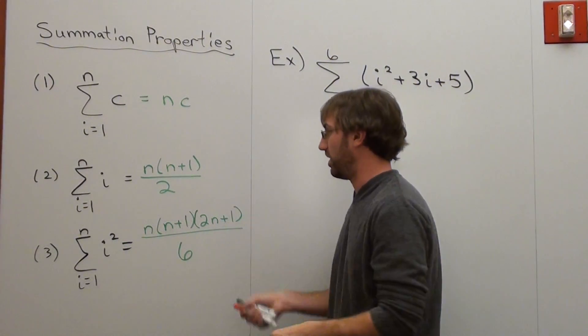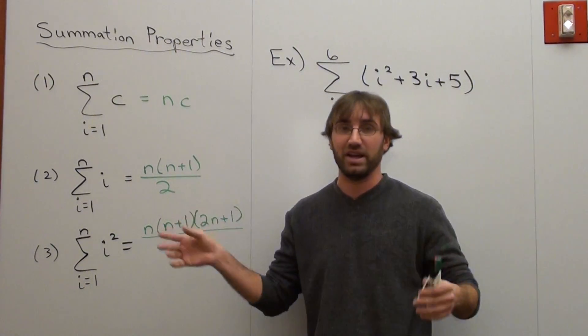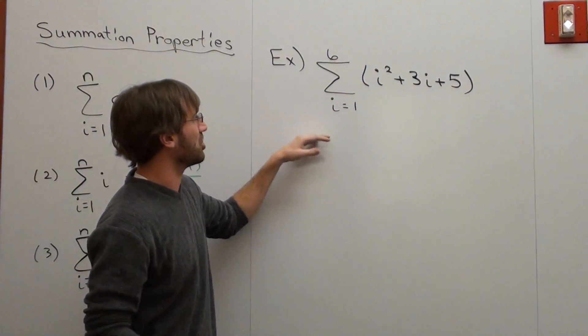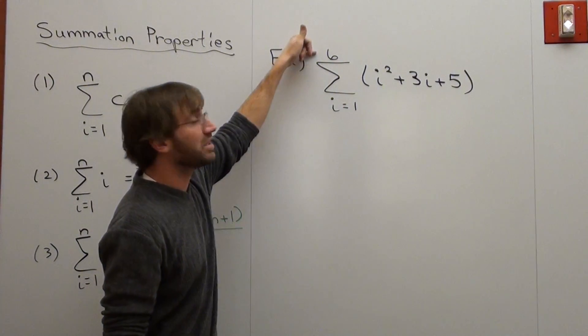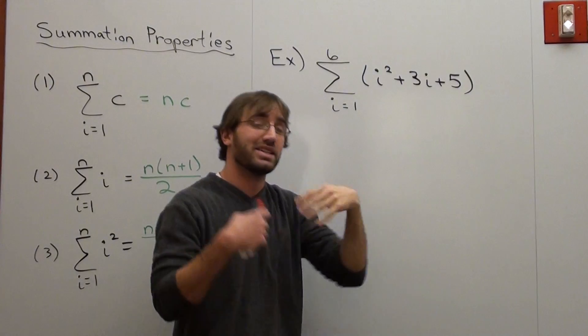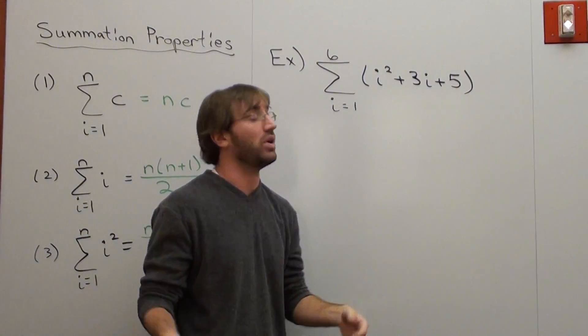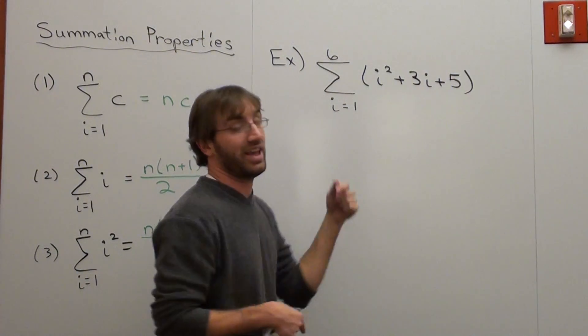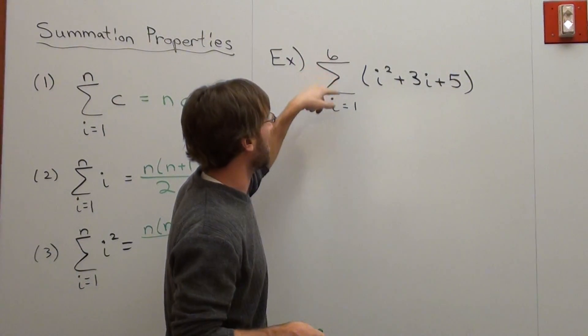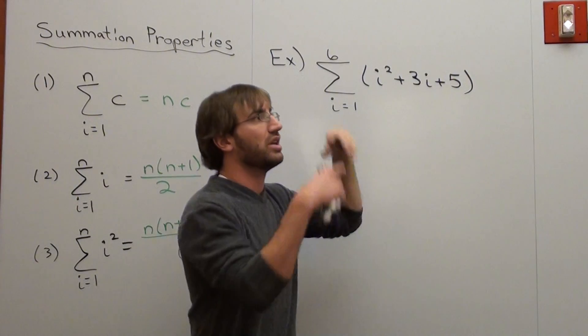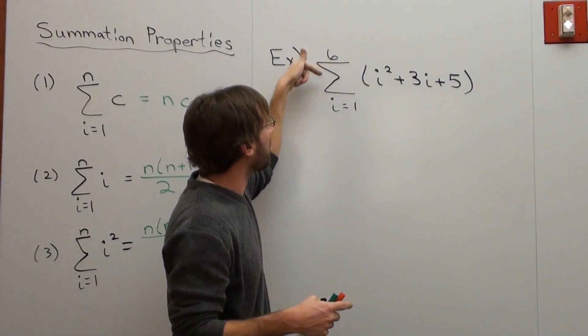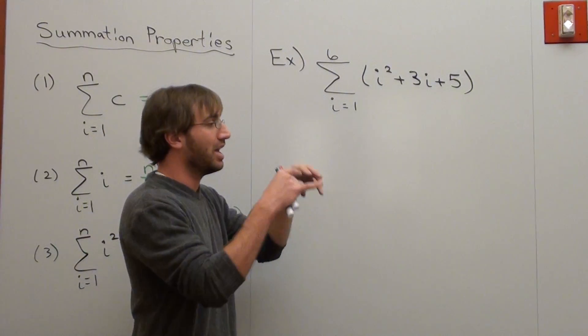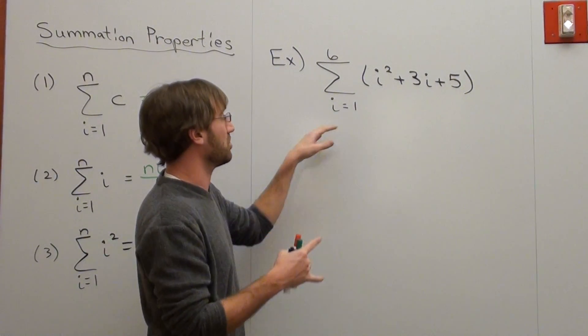We have this example where we have summation from i equals 1 up until 6 of this expression. Basically what that means is you substitute in the number 1 for all of these, figure out what that is, then add it to when you substitute in the number 2 to all of these, and then 3 all the way up until 6 because that's what we go to. That's our upper bound, that's our lower bound. Basically, you take the sums of all of those that you substitute in.